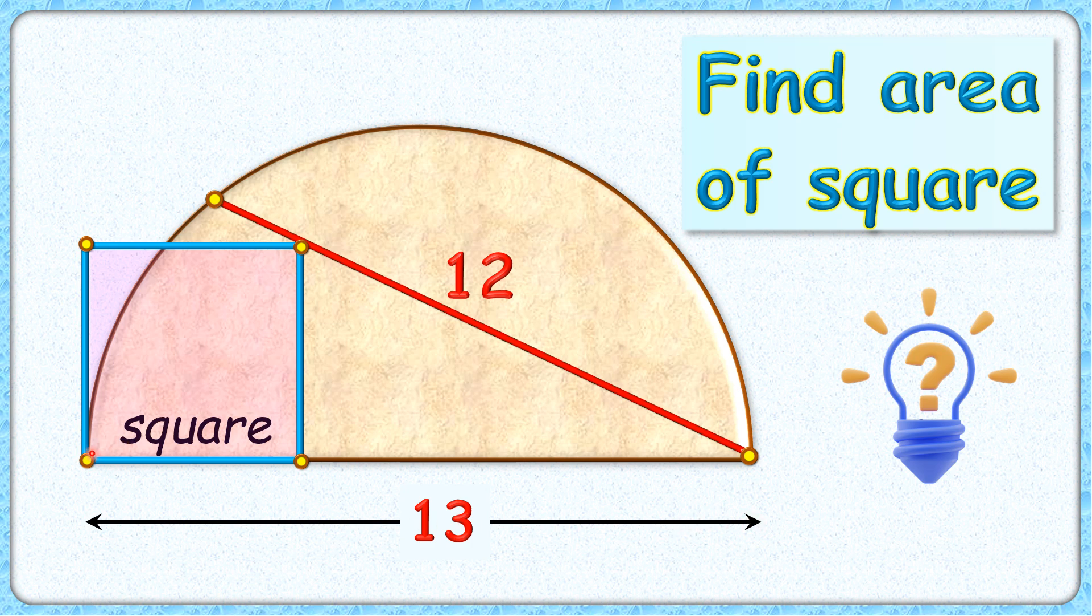A square is drawn in this semicircle and a chord is drawn which is touching this square at one of the vertices. Length of chord is 12 cm. The exciting part is with this limited data we have to find the area of the square.